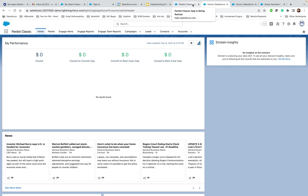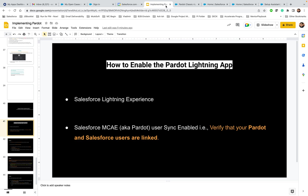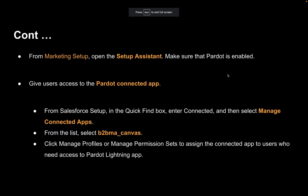The second thing is the users should be linked. Now, moving to the next slide — this is the tricky part. Most of the time you'll miss it, and you'll configure the rest of the things needed to enable Pardot Lightning App, but things might not be working in your Salesforce org. What this point is: go to the Marketing Setup, then open Setup Assistant, and make sure you have enabled Pardot in your Salesforce org.